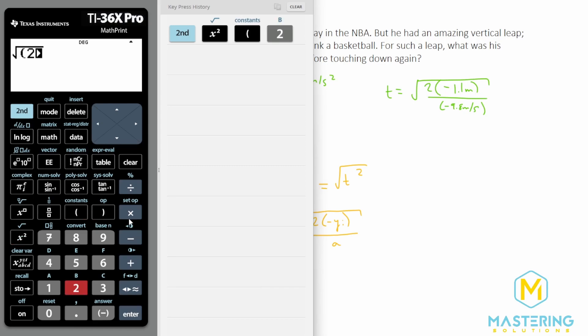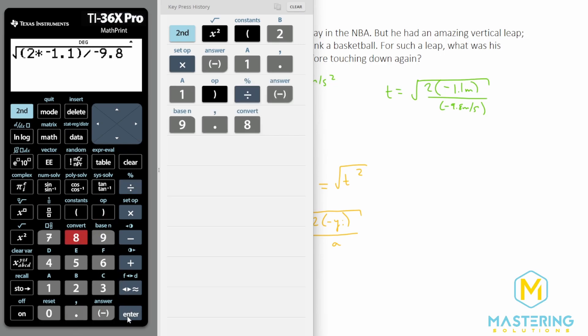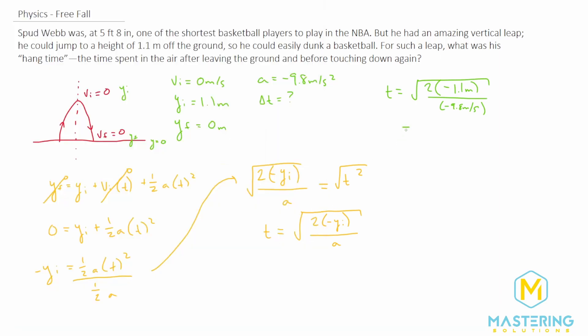Let's plug that in. So we have two times negative 1.1 meters divided by negative 9.8 meters per second squared, which gives us a hang time of 0.47 seconds. But hold on before you plug that in, you'll get the wrong answer.